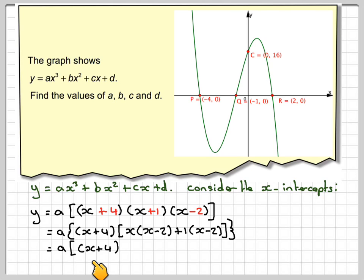So you get that a times x plus 4, which we now have to expand. X times x, which is x squared, x times minus 2, which is minus 2x, plus x minus 2. And then collecting those like terms together, we're going to get x squared minus x minus 2.